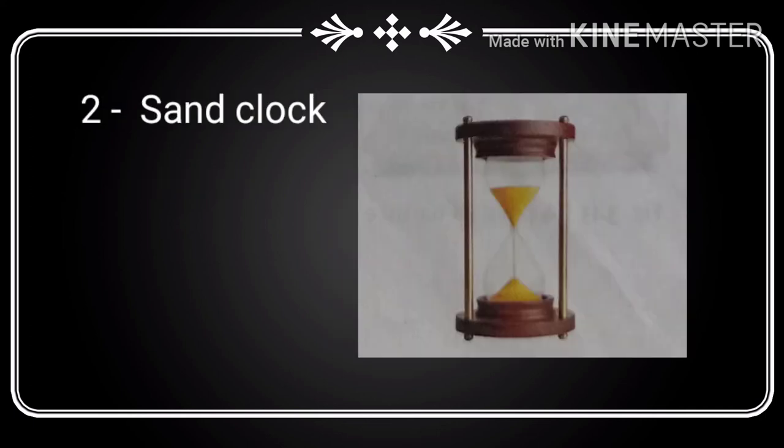Sand clock: The sand clock is an ancient device used for time measurement. The principle of the sand clock is that a certain quantity of sand falls from its upper chamber to the lower chamber in a fixed amount of time.